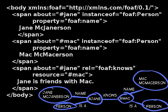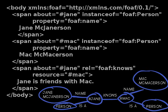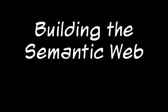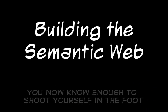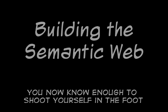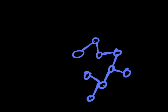You now know the basics of RDFa. You don't need to know much more to start authoring complex RDFa documents. This is how the semantic web is built — triple by triple. Triples link to other triples, which then link to more triples. These links go between pages, between blogs, between sites, and between countries.